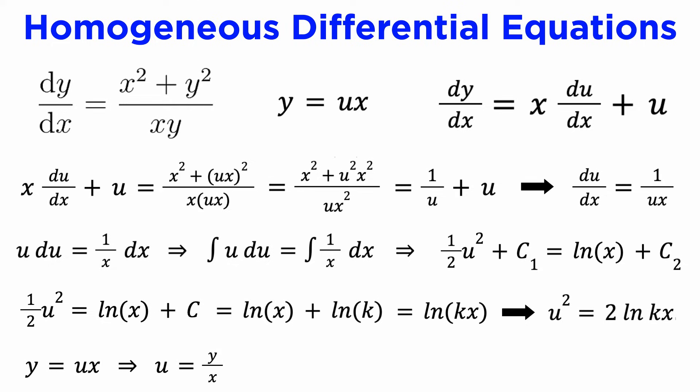The last thing to do is undo the substitution y equals ux to change the solution variable from u back to y. So we replace u with y over x in our implicit solution to get y squared equals 2x squared log kx, which is the general solution to our DE.